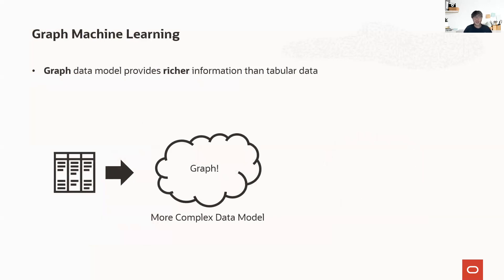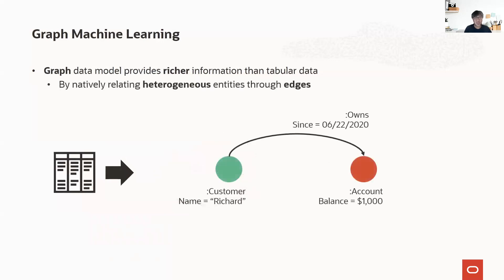The graph data model provides richer information than the tabular data model. In the tabular data model, the dataset consists of a collection of records, and a record consists of a set of features. The graph data model conveys additional information on top of the tabular data model by relating heterogeneous records through edges. Different from the tabular data, which expects homogeneous data layout as much as possible, the graph data model ties the heterogeneous entities through connections between them.